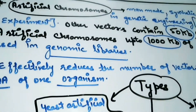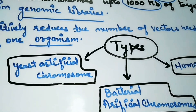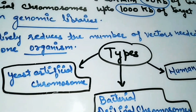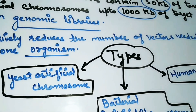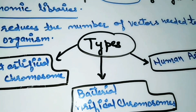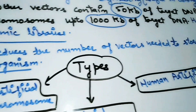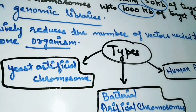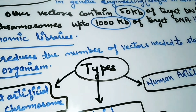Artificial chromosomes are basically of three types: the first one is yeast artificial chromosome, the next one is bacterial artificial chromosome, and the third one is human artificial chromosome. The details of each type will be explained in my next video.